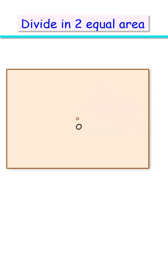Let's check the solution. We'll use the fact that in a rectangle, any straight line passing through the center of the rectangle divides it into two equal areas.